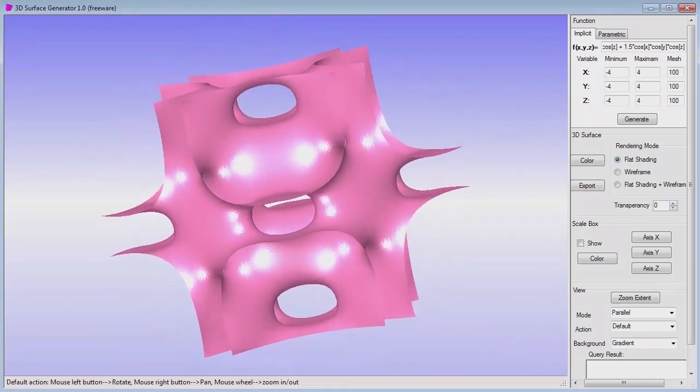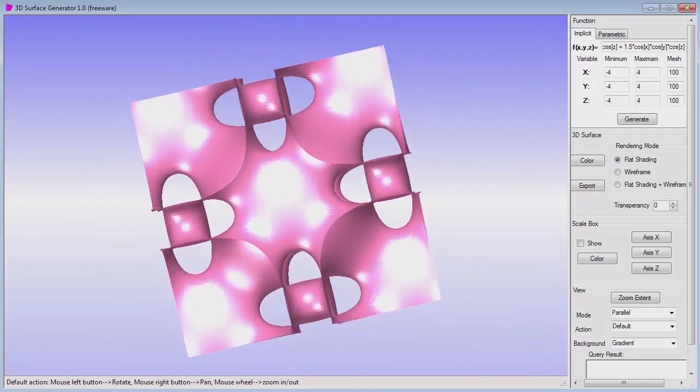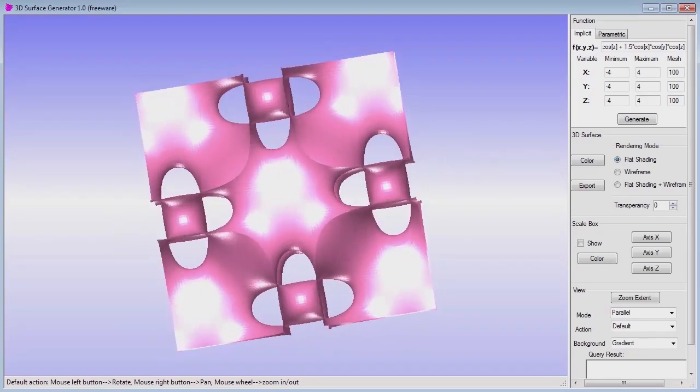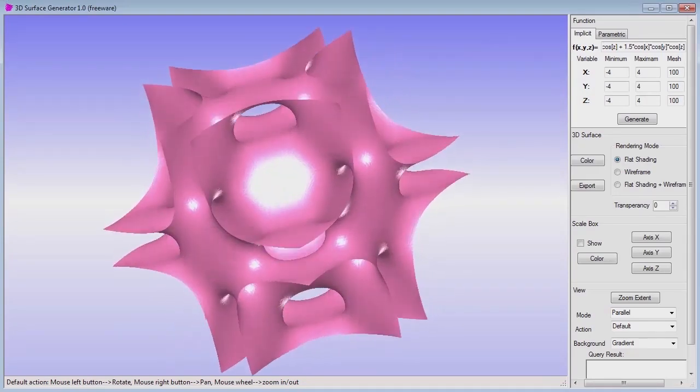Going back to the software, instead of a parametric surface like the torus, you might have an implicit definition, meaning you're interested in the surface at which some function of x, y, and z is 0.